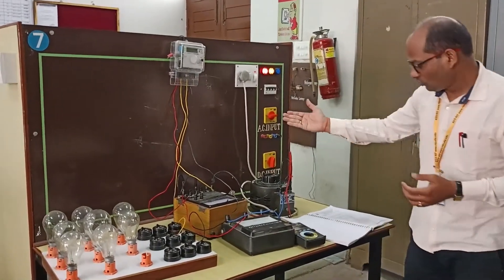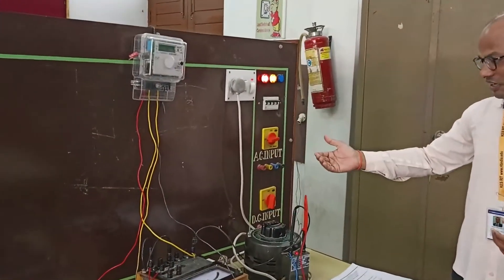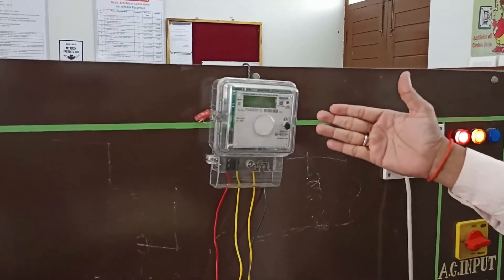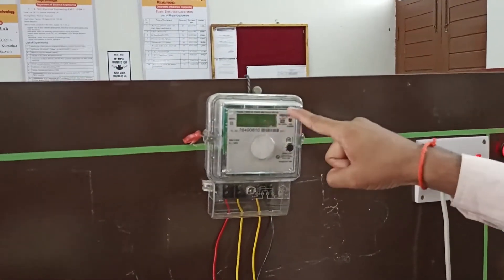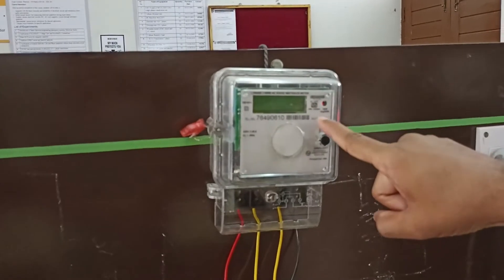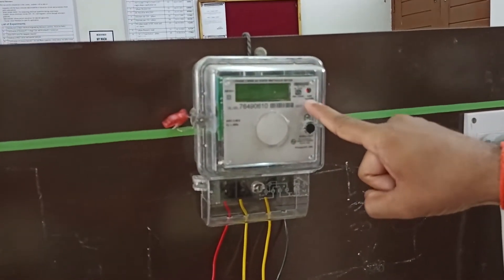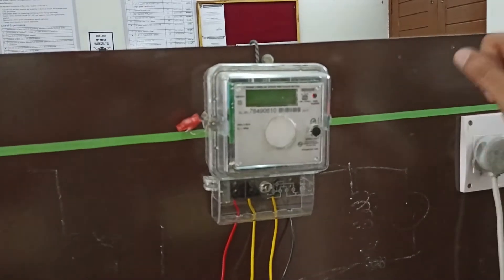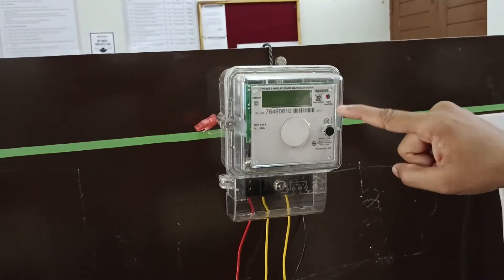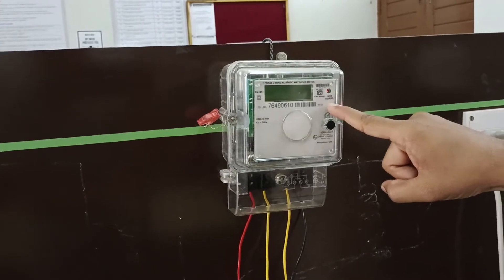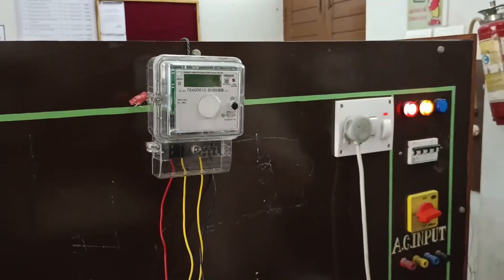For the apparatus we have single phase energy meter which is your AC static watt hour meter having the rating of 3200 impulse per kilowatt hour. That means for 1000 watt in one hour it shows 3200 blinks which is considered as an impulse.